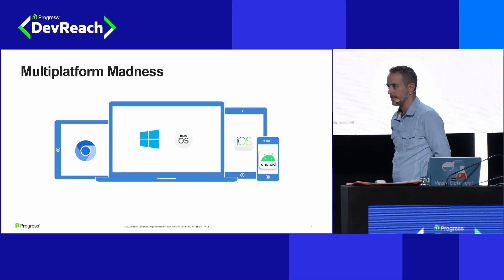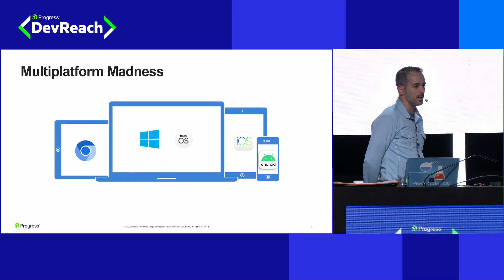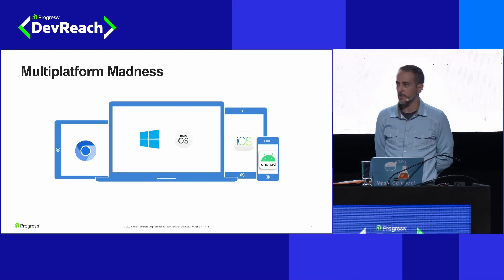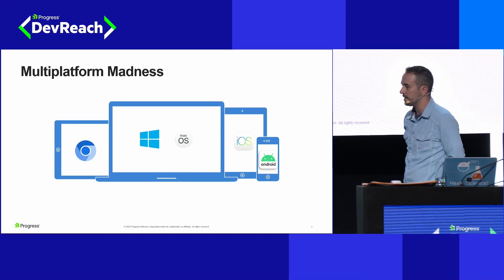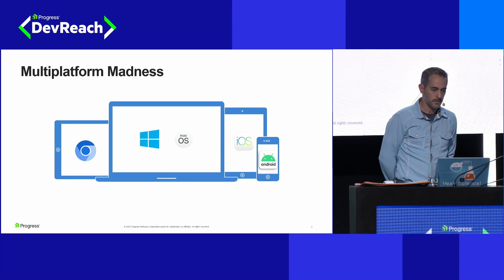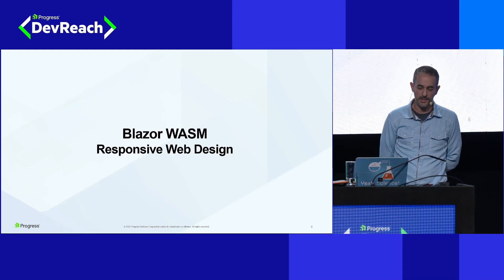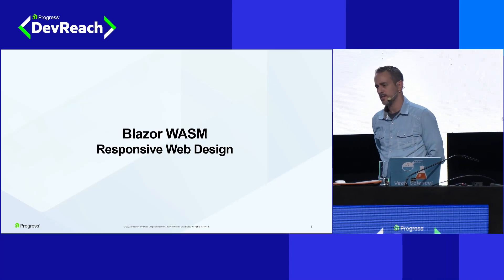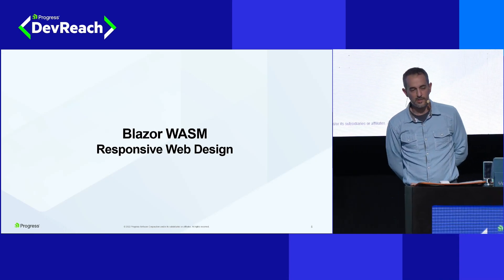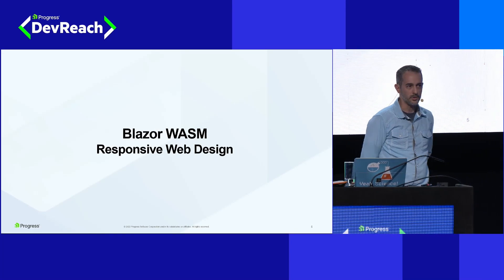We have all of our devices that we use: our Android devices, our Apple Mac, and our browsers everywhere. We'd like to try to target as many of these platforms as we can with the least amount of code as possible. So we're going to start with an overview of what Blazor WebAssembly is and some of the implementation details. We're also going to talk about responsive web design, because that's one of the things that allows us to target multiple platforms with web technology only.